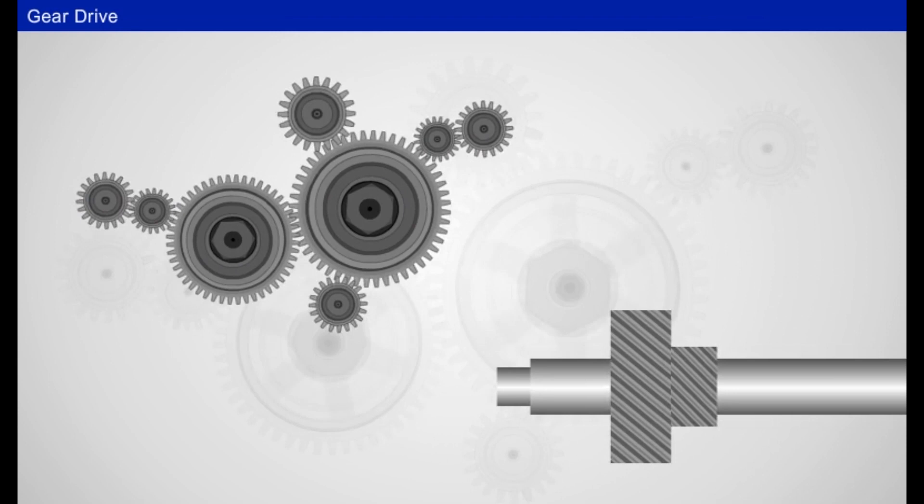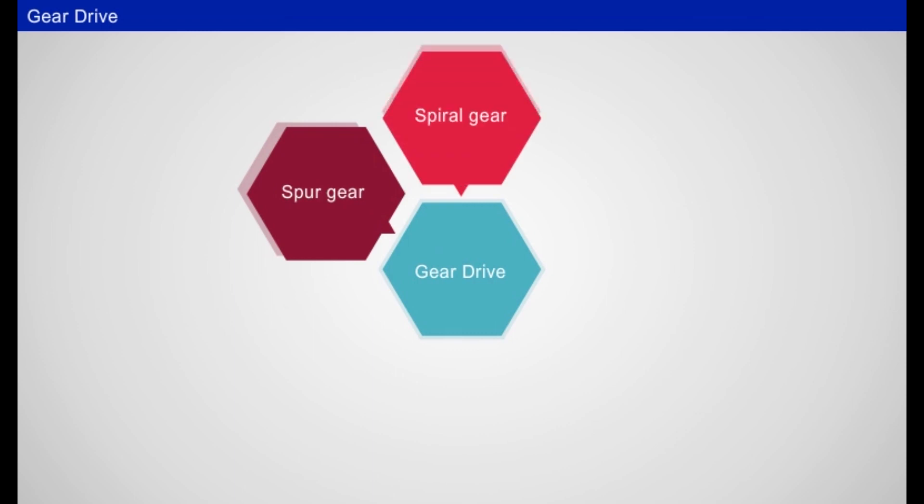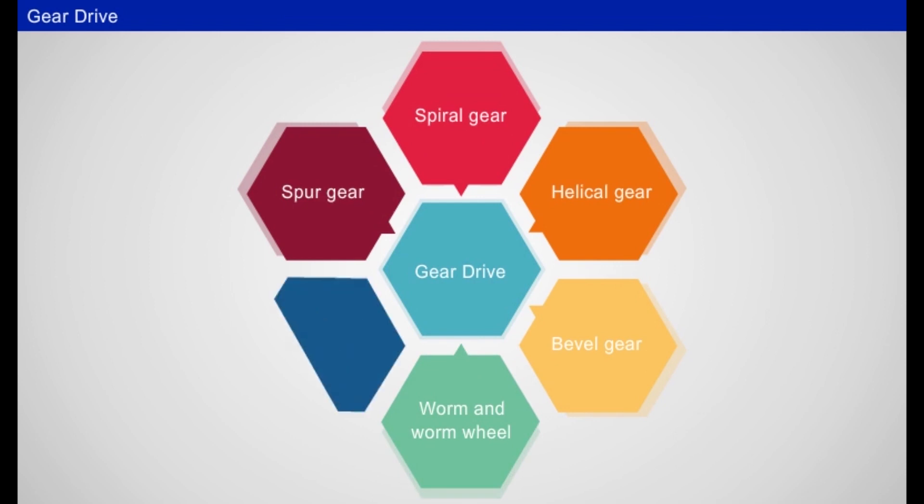Different types of gears are used for connecting shafts. They are: spur gear, spiral gear, helical gear, bevel gear, worm and worm wheel, rack and pinion.